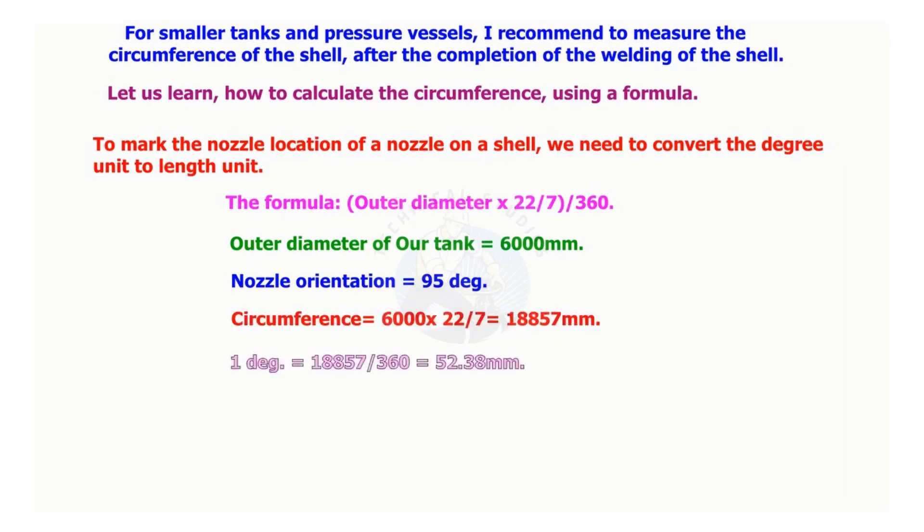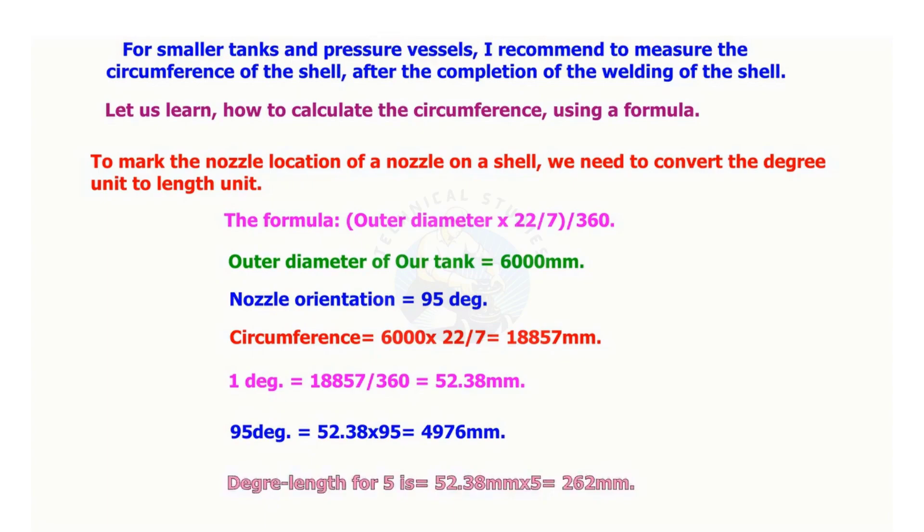1 degree equals 18,857 divided by 360 equals 52.38 millimeters. 95 degrees equals 52.38 multiplied by 95 equals 4,976 millimeters. Length of 5 degrees equals 52.38 multiplied by 5 equals 262 millimeters.